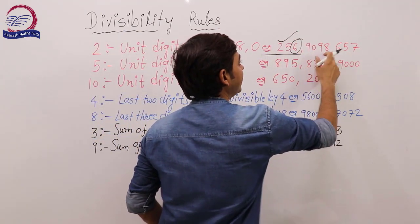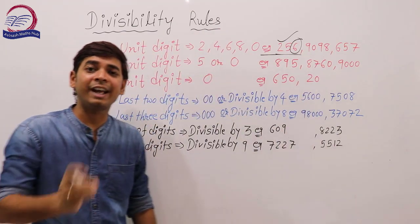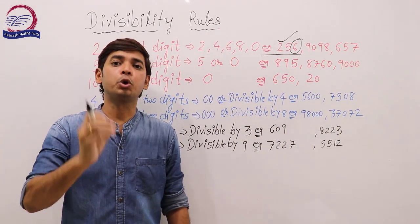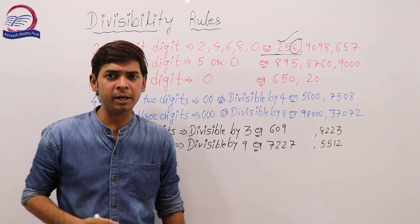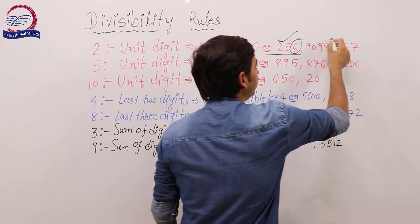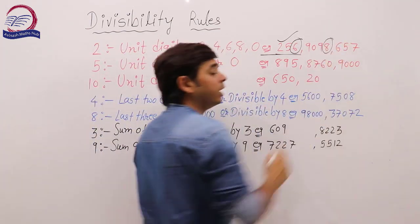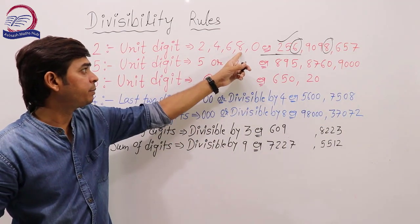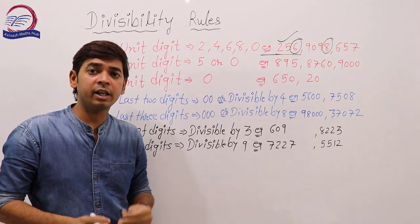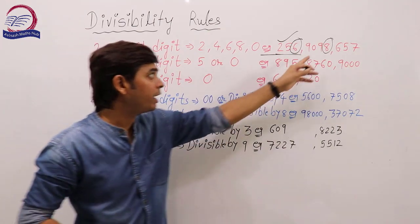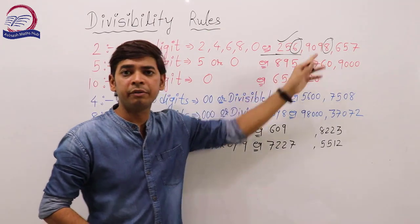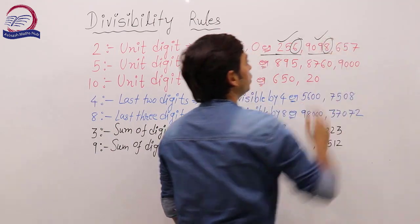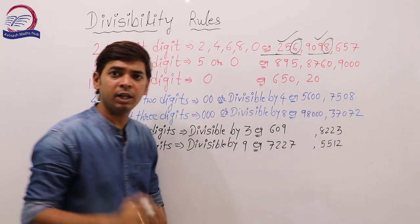Now take 9098. Is this number divisible by 2? Let's look at the unit digit. The unit digit is 8. Since 8 is present in our list, we can say this number is divisible by 2.